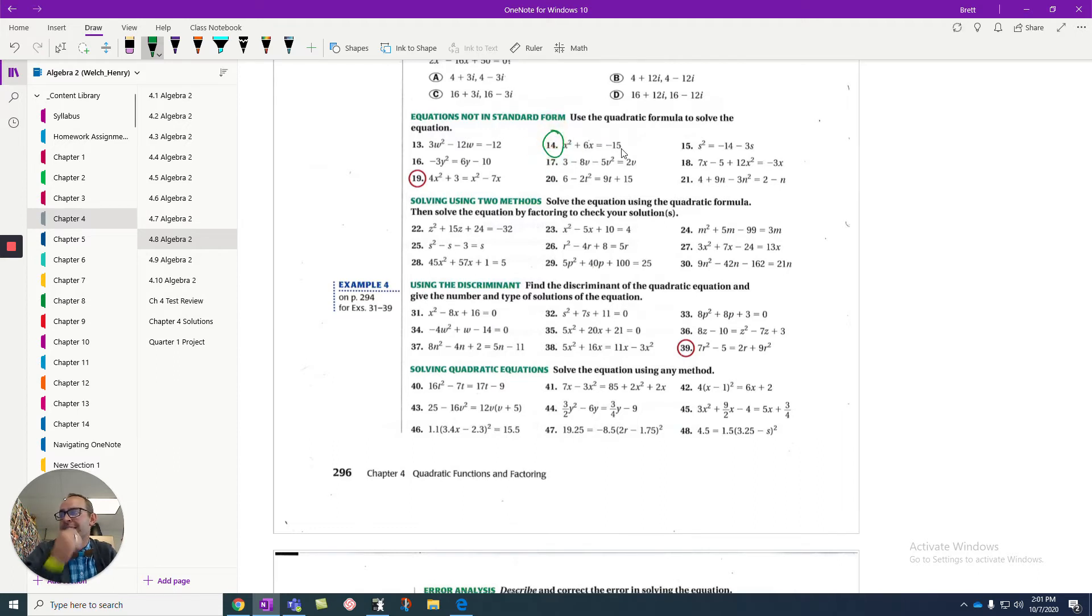Let's take a look at question number 14. You'll notice that on question 14, it's not equal to 0, which means this isn't solvable yet. We have to be equal to 0. So, x squared plus 6x plus 15 would equal 0. We added the 15 over. In this case, a would be 1, b would be a positive 6, and c would be 15. The quadratic formula is negative b, plus or minus the square root.